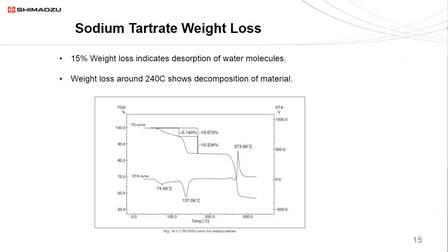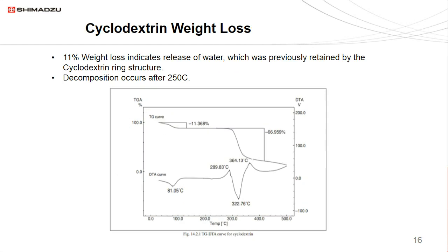Here's an example of sodium tartrate weight loss. We can see weight loss in two stages: the first is a 15% weight loss indicating the absorption of water molecules, and then there's a second weight loss around 240°C showing the decomposition of the material. Another weight loss example is with cyclodextrin, where we again see multiple stages of weight loss. The first is 11% weight loss indicating the release of water previously retained by the cyclodextrin ring structure, followed by decomposition occurring at around 250°C.